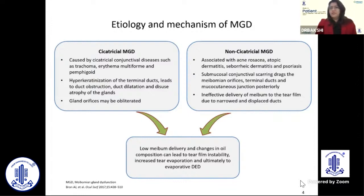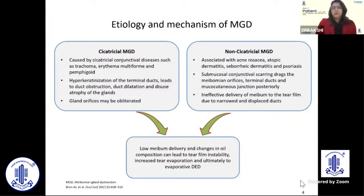In non-cicatricial MGD, we have the hyper-secretory type, where causes could be acne rosacea, seborrheic blepharitis, and psoriasis. Here, subconjunctival scarring drags the mucocutaneous orifices and the meibomian orifices posteriorly, leading to ineffective delivery of the meibum to the tear film. All these causes eventually lead to low meibum delivery, changes in oil composition, and evaporative dry eye.